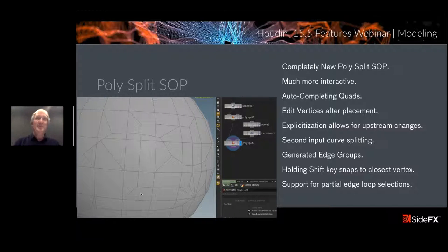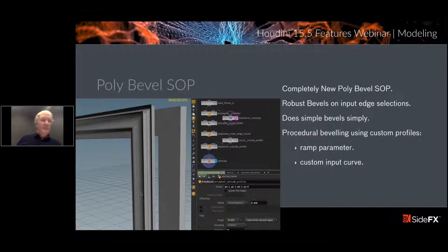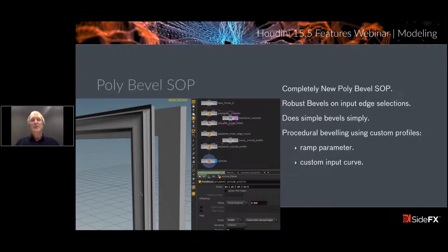Some other PolySplit features: 'Relativization allows for upstream changes' — this option safeguards your PolySplits against any upstream topology changes. If you change the size of the geometry, it knows what derivative from the perimeter it hit and will try to keep up with that. We need modeling tools that can be used procedurally — that's the higher level we need to attain. Generate edge groups, holding Shift snaps to the closest vertex — it's a really good update overall.